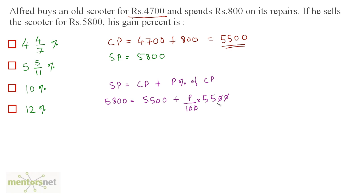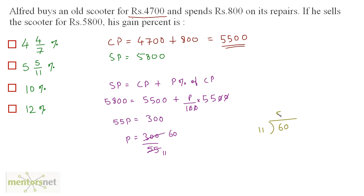The zeros cancel out, and what remains is 55P equals 5800 minus 5500, which is 300. So P equals 300 by 55. Since 5 times 60 is 300 and 5 times 11 is 55, we divide 60 by 11. That gives 5 remainder 5, so P equals 5 5/11 percent. The profit percent is 5 5/11, and option B is the right answer.